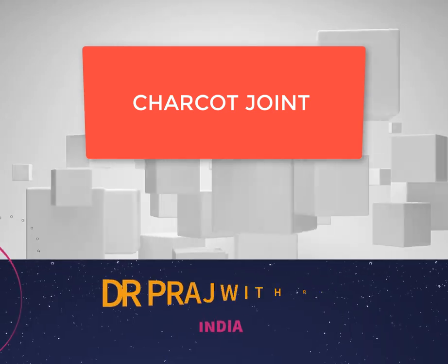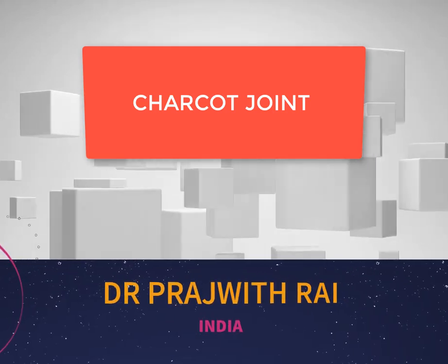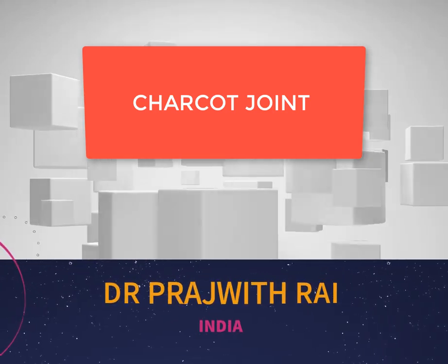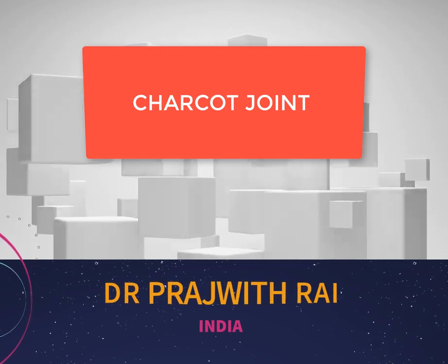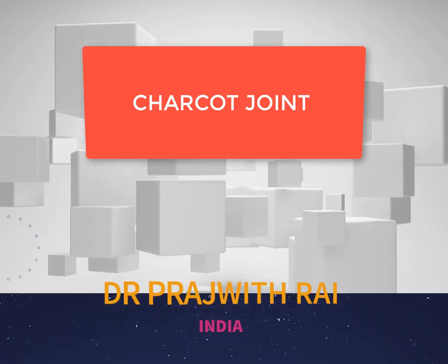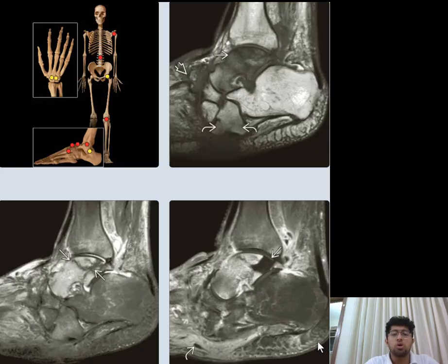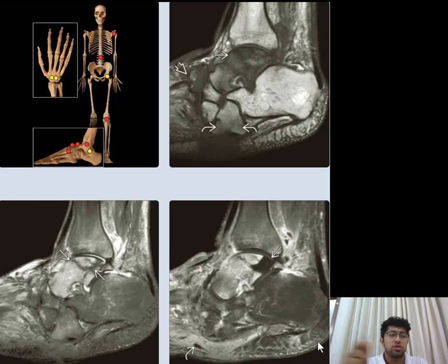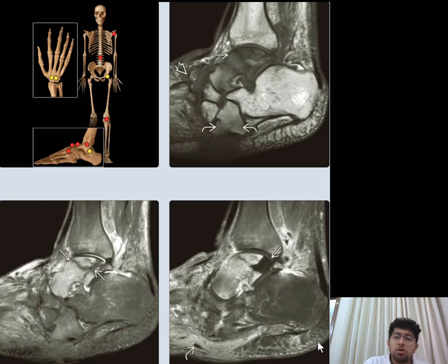Charcot's joint is a severely and rapidly destructive joint disease caused by various conditions that result in loss of sensation in the joints. The specific cause depends on the location of joint involvement.